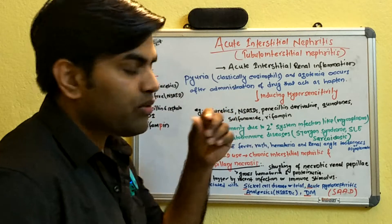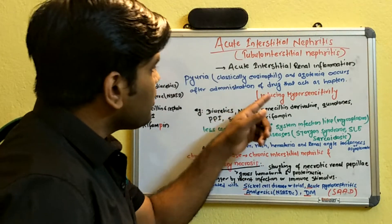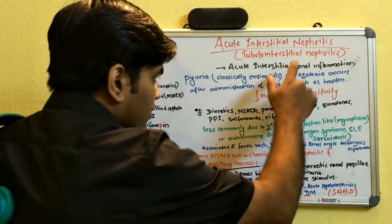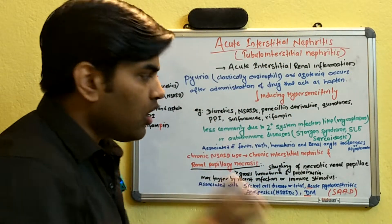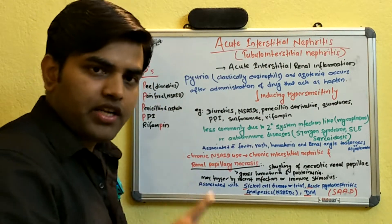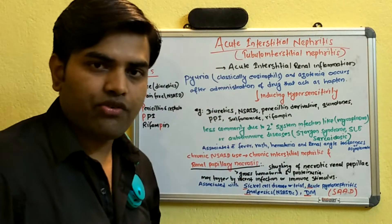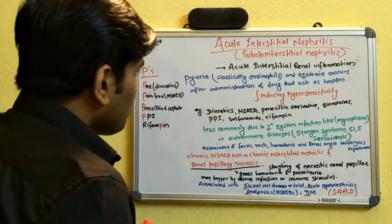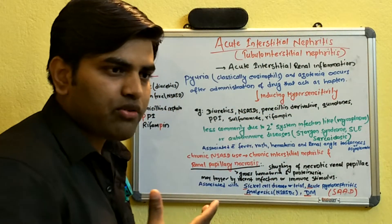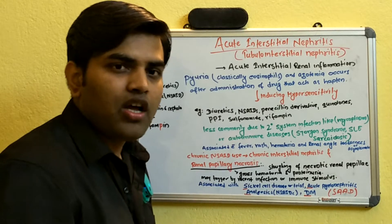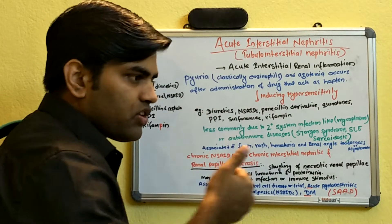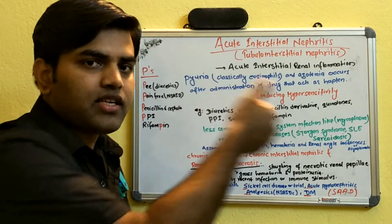The drug administered acts as a hapten and leads to hypersensitivity, which damages the renal tubules through inflammation — there is no necrosis. This inflammation eventually causes acute renal failure. These drugs are generally not directly nephrotoxic in the same way as aminoglycosides or cisplatin seen in nephrotoxic ATN; instead, they act through an immunological hypersensitivity reaction.